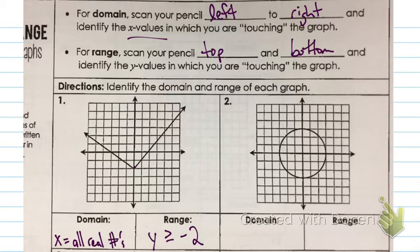All right, Brinker. You're going to help me with the domain on this next one, number 2. So again, we're going to scan our pencil left to right kind of vertically, up and down. So what are my possible x values here, Brinker?